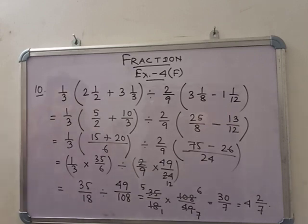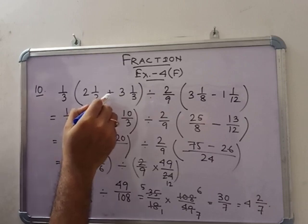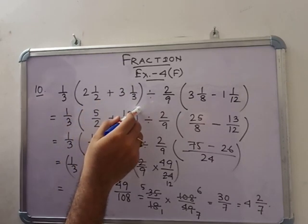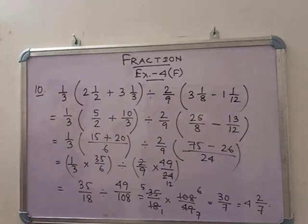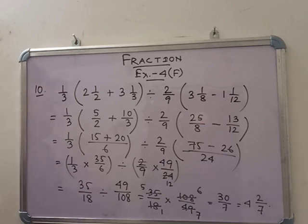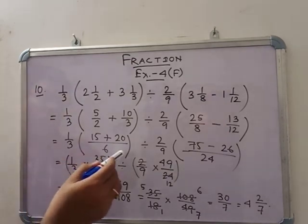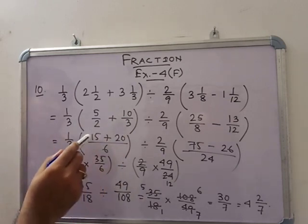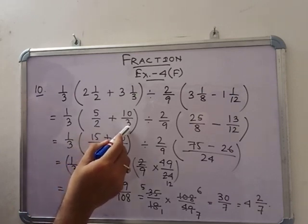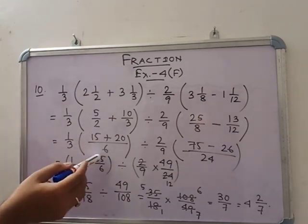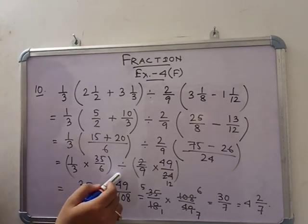In number 10, see that: 1 by 3 of first bracket — 2 of 1 by 2 plus 3 of 1 by 2, so 1 by 3 — so 1 by 2 minus 1 of 1 by 3. We write: 1 by 3 within bracket, 5 by 2 plus 10 by 3 divided by 2 by 9 within bracket, 25 by 8 minus 13 by 12. By simple addition of the fraction — LCM is 6: 15 plus 20, because 6 divided by 2 is 3, 3 into 5 is 15, and 6 divided by 3 is 2, 2 into 10 is 20. So 15 plus 20 — that means 35 by 6. Division is there. Same — LCM of 8 and 12 is 24.